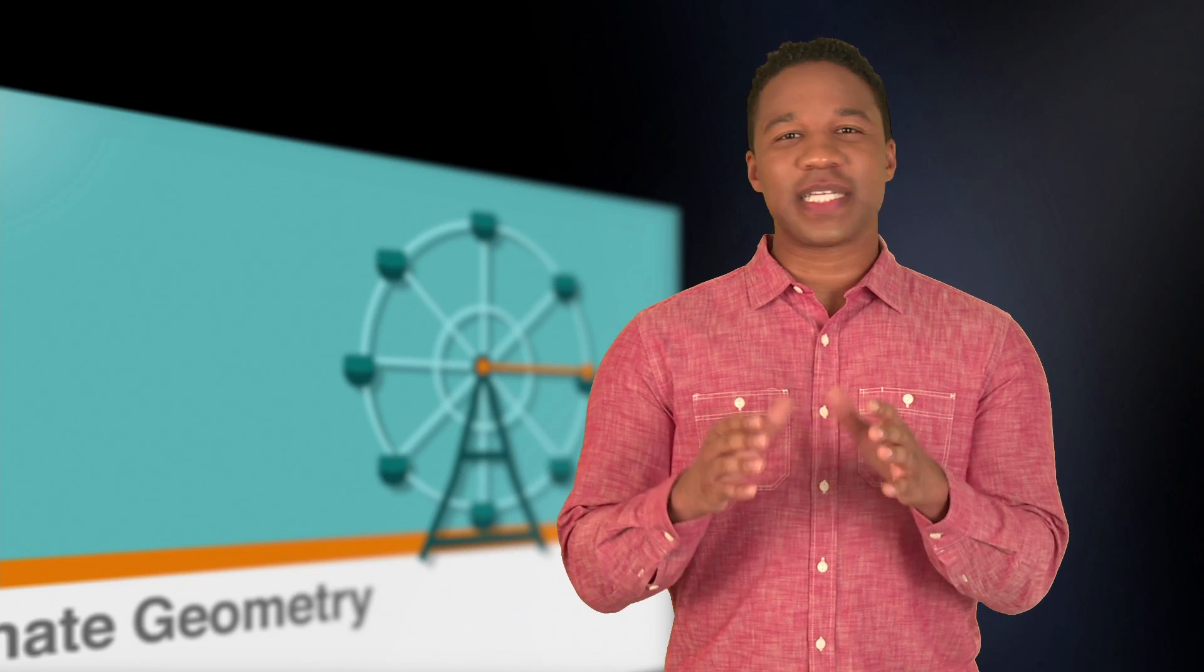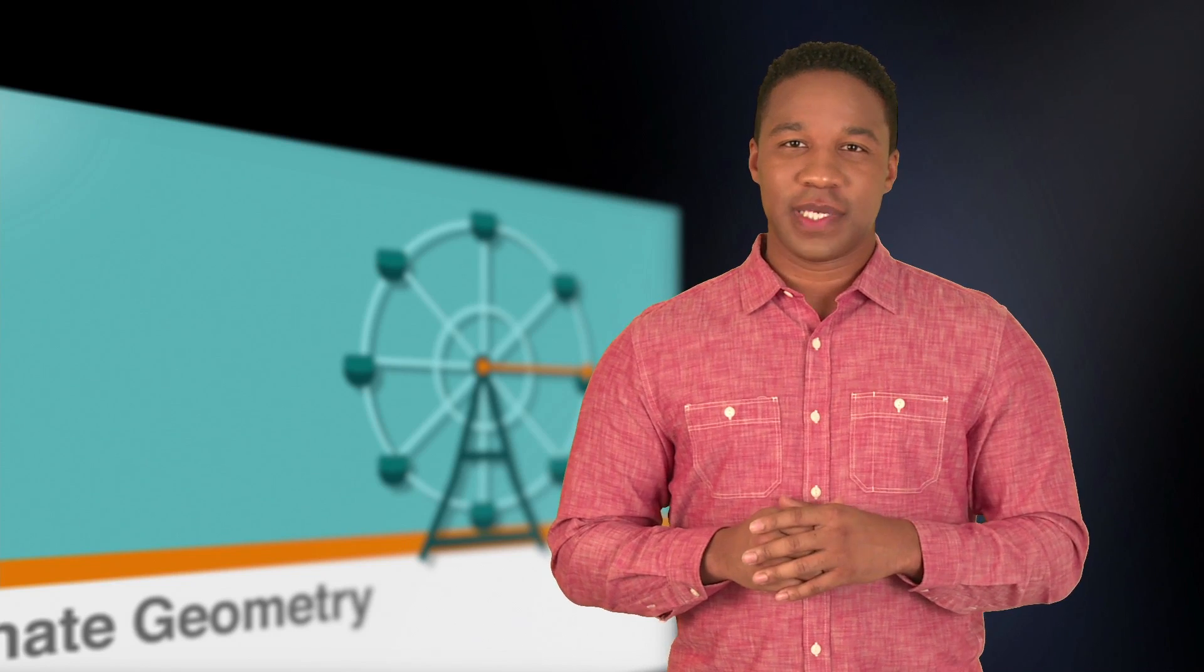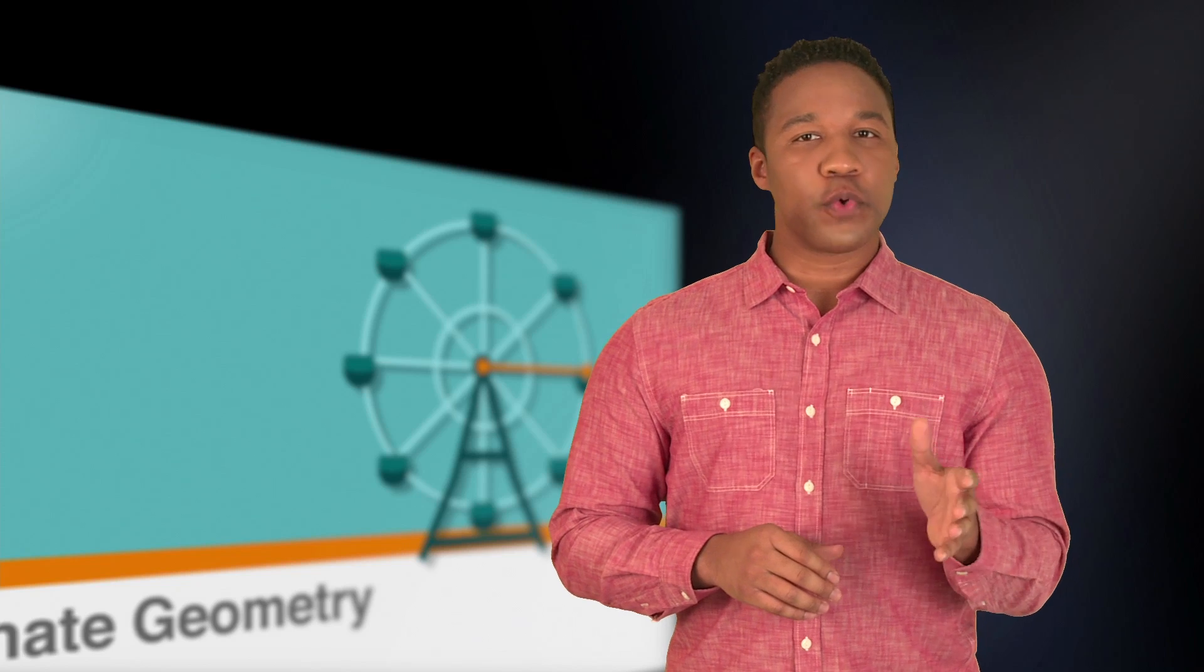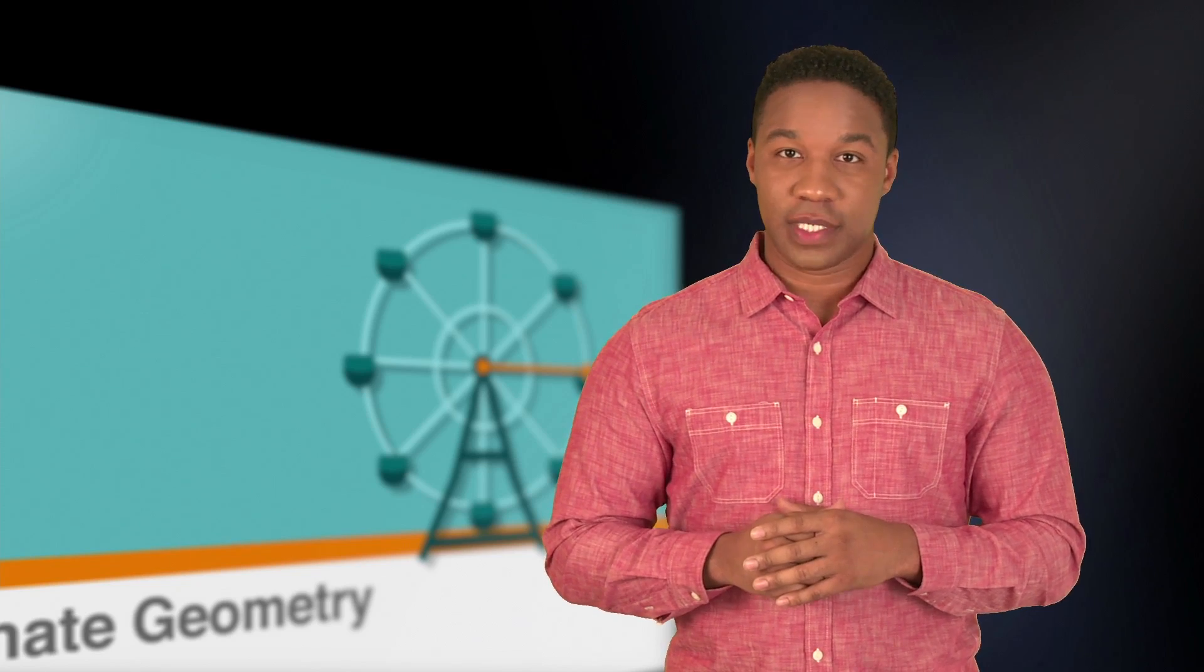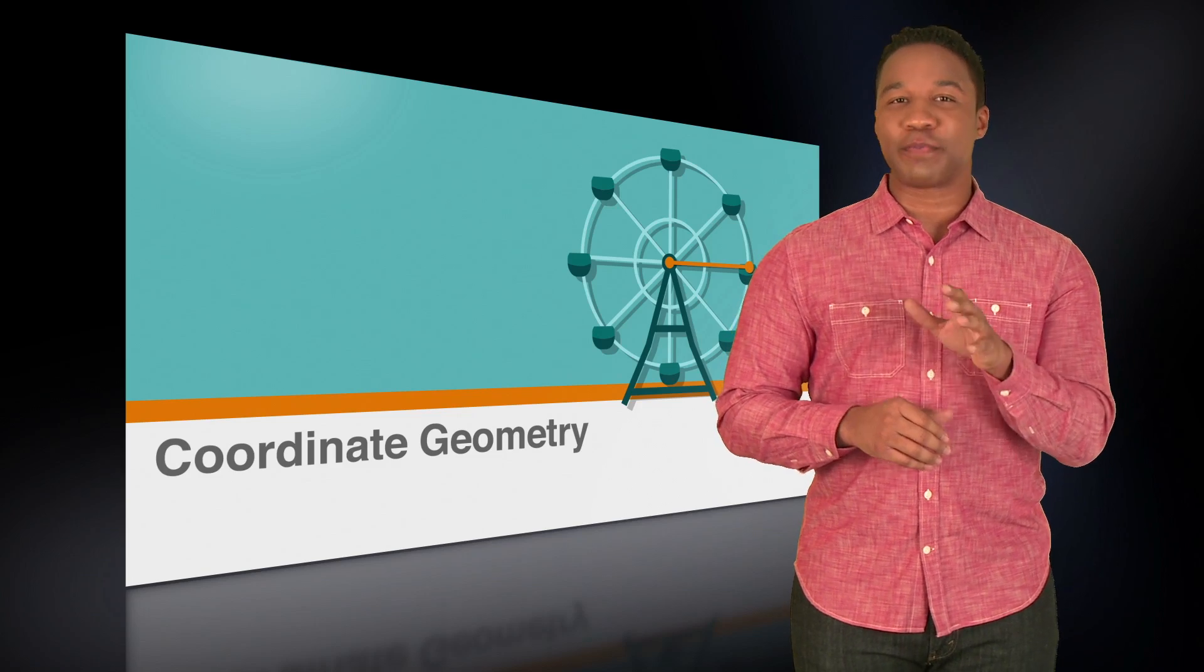Another problem type that's common on the ACT is the midpoint problem. This type of problem gives you two points and asks you to find a midpoint. It can also give you one endpoint and a midpoint and ask you to find the other endpoint. Let's look at the formula for a midpoint problem.